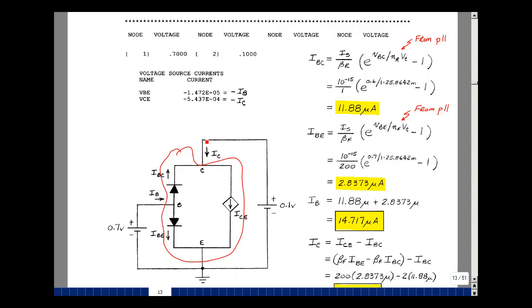The current I sub c is equal to this current minus this current. In other words, if I were to write this in this direction, whatever enters the node leaves the node, and this would be the negative of the base collector current.